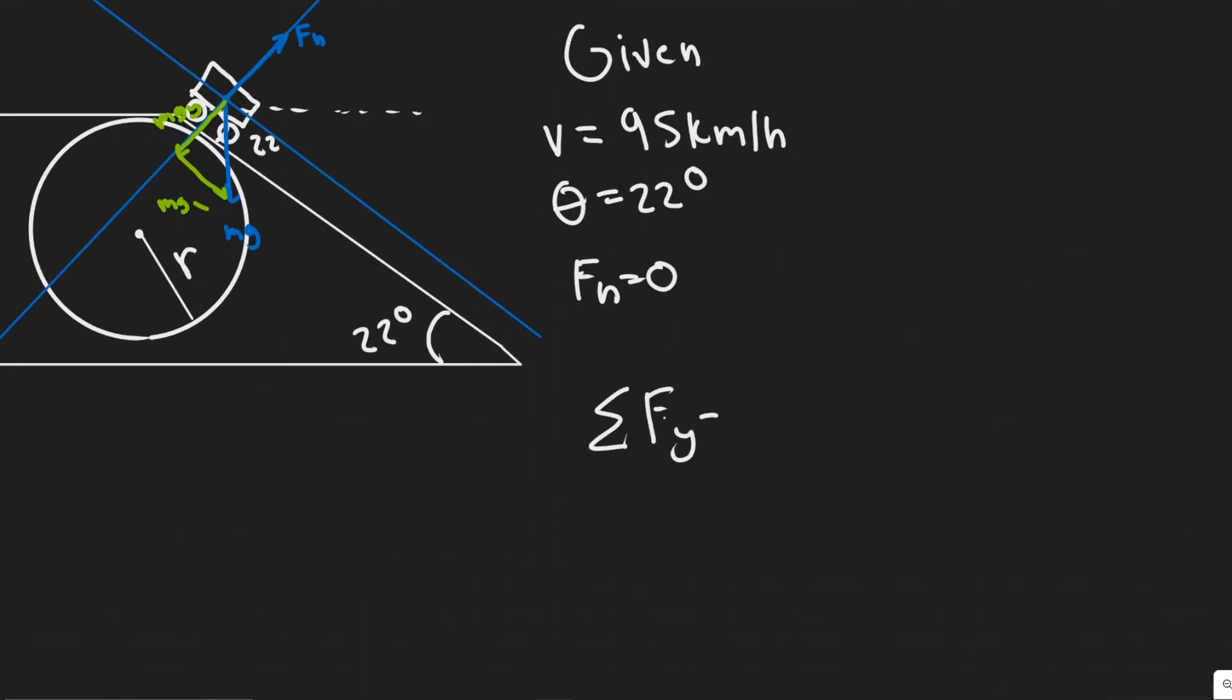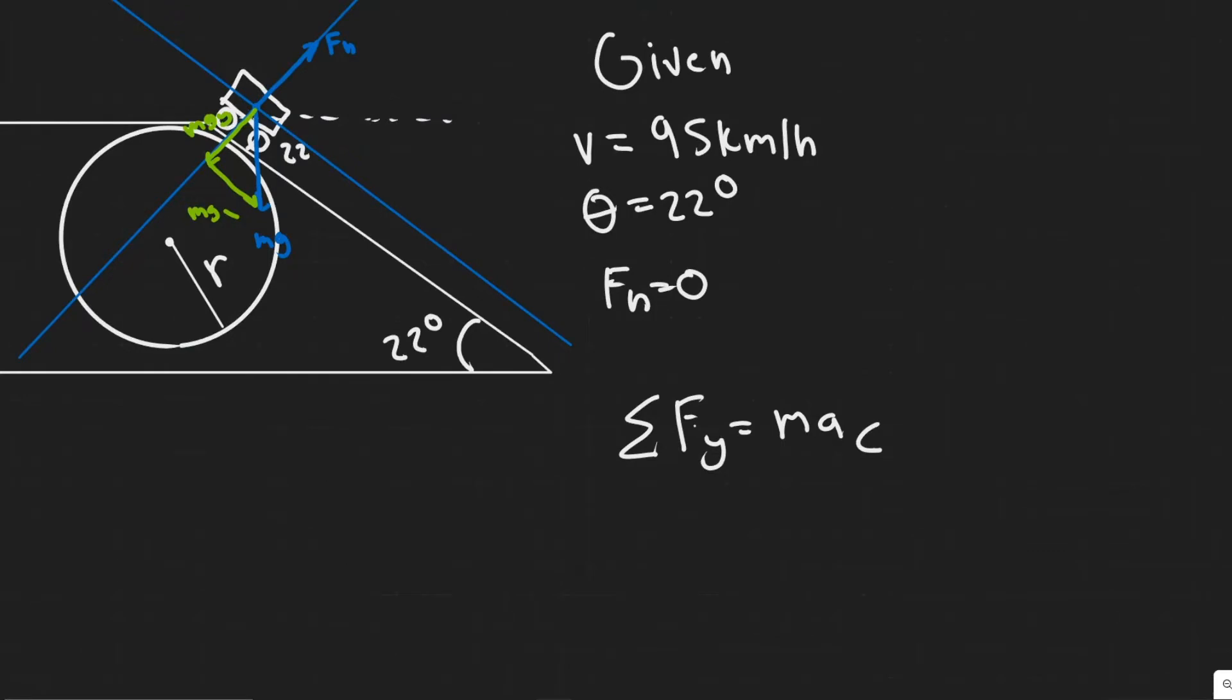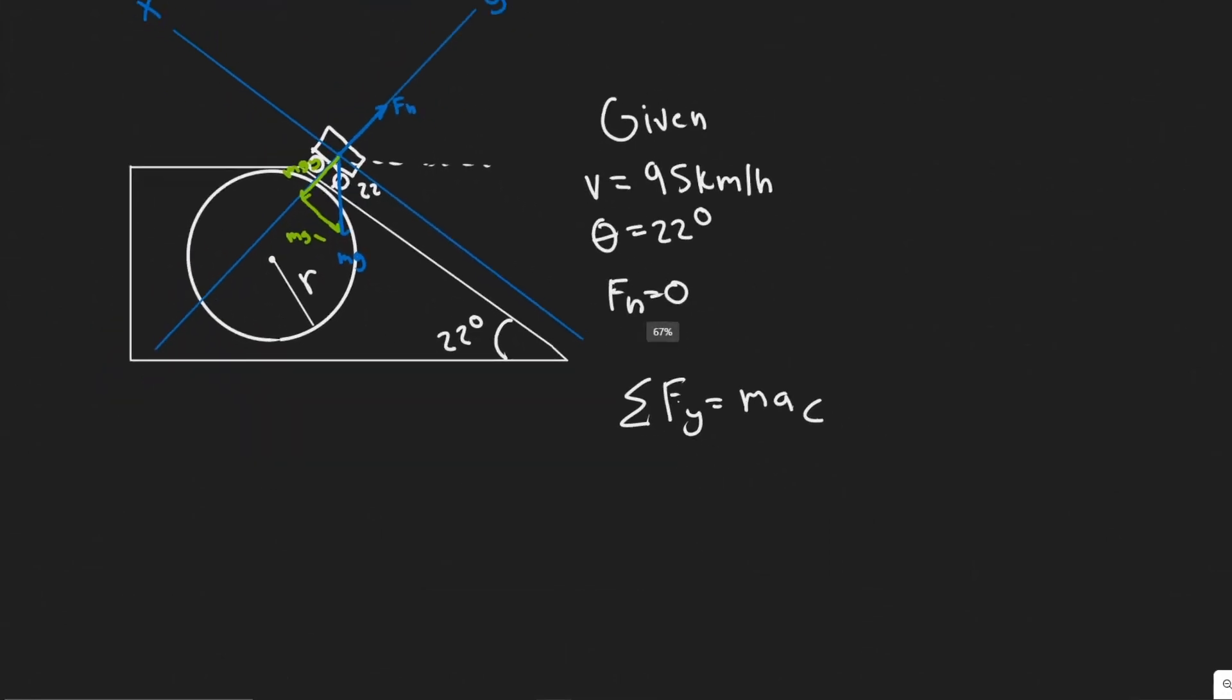So what we're going to do now is sum the forces in the y. So we know the sum of the forces in the y are going to be equal to m*a_c. Now why is it equal to m*a_c? It's going to be equal to m*a_c because we're traveling in a circle here like this. So we're traveling in a circle. So it's going to be equal to m*a_c, because we're dealing with centripetal force.